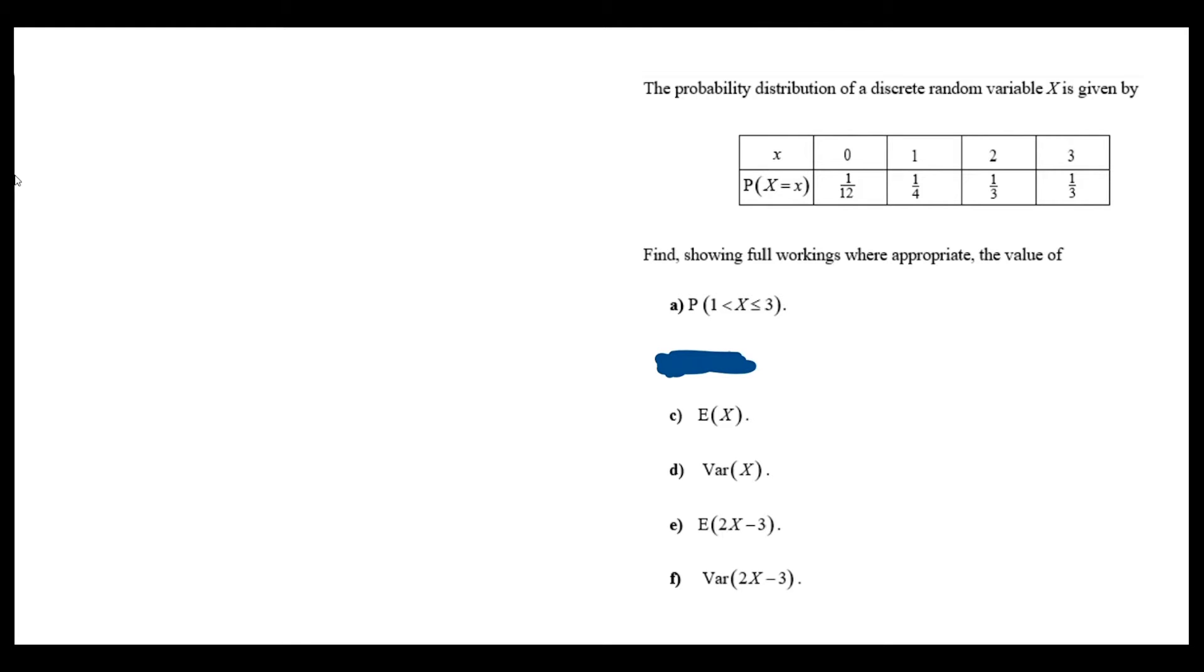In this question, we've been given the probability distribution of a discrete random variable. First, we're asked to find the probability that x is between 1 and 3, but we're not including 1 while still including 3. As usual, I want to rewrite this with the values that are included. So I'll write probability that x is between 2 and 3, including 2 and including 3.